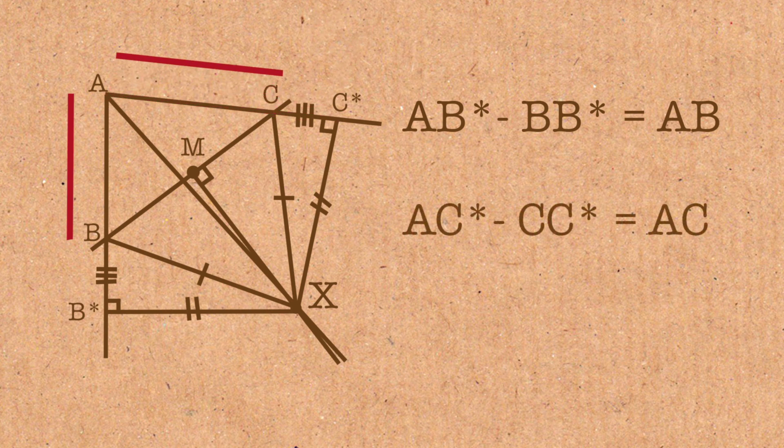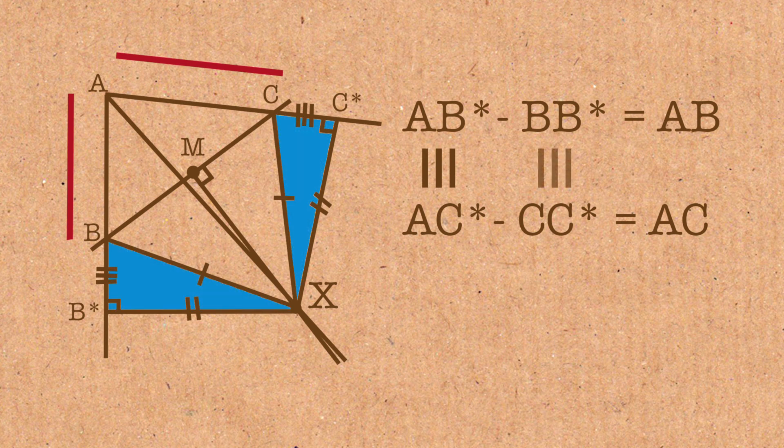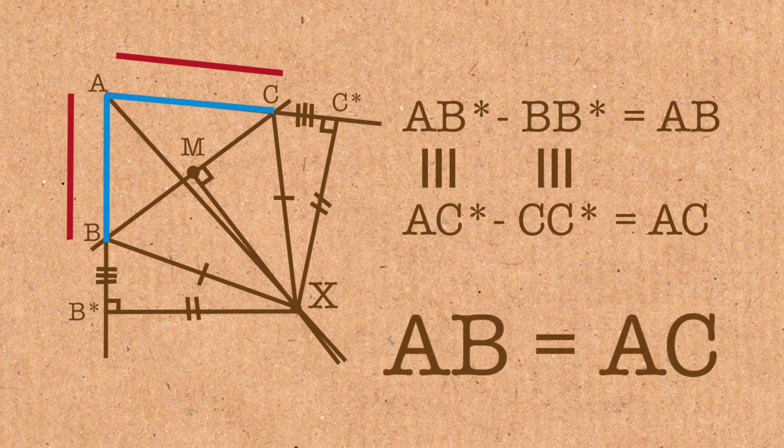Now, we're almost there. We have proven up here that AB star is equal to AC star. We have proven that BB star is equal to CC star. And so these two sides being equal, it essentially then follows that AB equals AC.